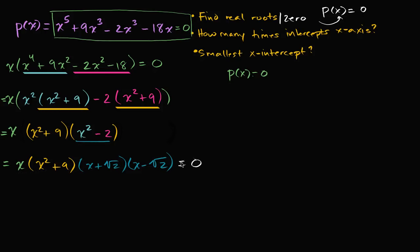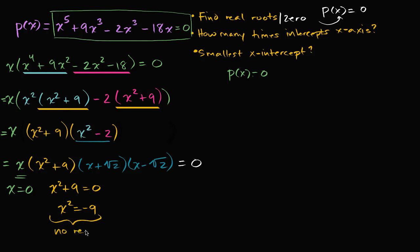So how can this product equal zero? Well, x could be equal to zero — that gives us a root. Can x squared plus nine equal zero? If you subtract nine from both sides, you get x squared equals negative nine, and there's no real solution to that. There are some imaginary solutions, but no real solutions.